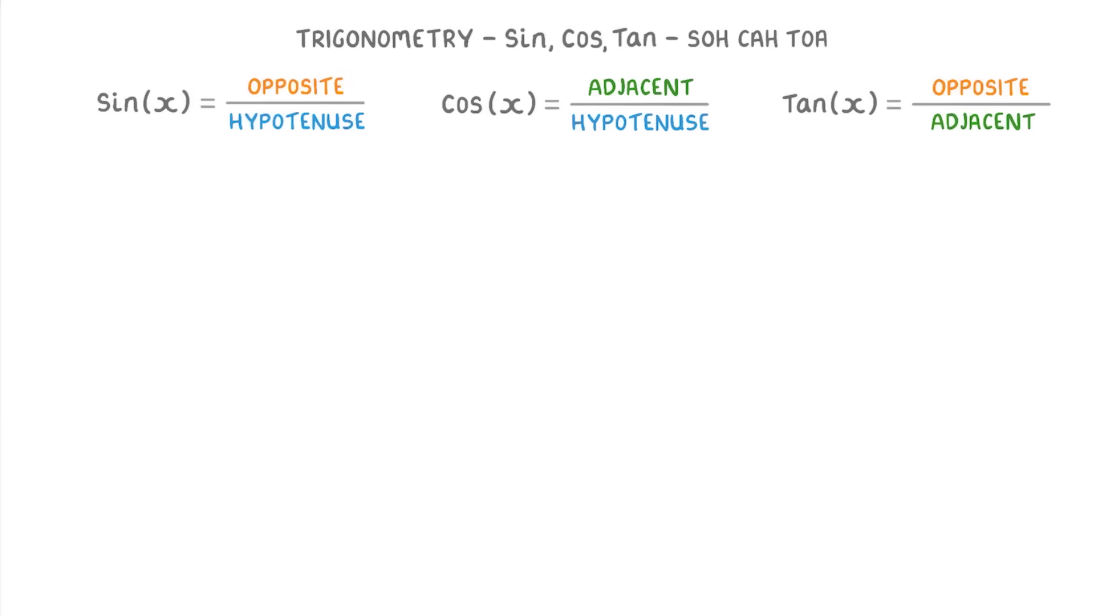To see how these equations work in practice though, let's have a look at this question where we've got to work out the value of the unknown angle X. Now whenever you get a question like this, the first thing that you want to do is label all of the sides. So this one is the hypotenuse because it's the longest side and opposite the right angle. The bottom one is the adjacent because it's next to our angle that we're trying to find, and this one is the opposite because it's opposite our angle X.